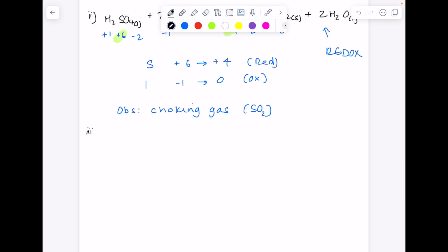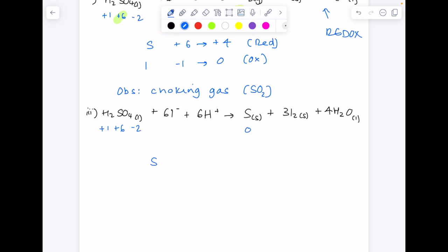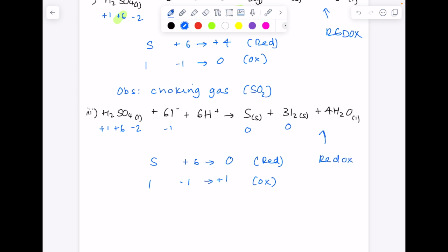Reaction three. There's sulfur being reduced again. There's iodine being oxidized. So that is a redox reaction. Our observation here is that sulfur produced is a yellow solid.